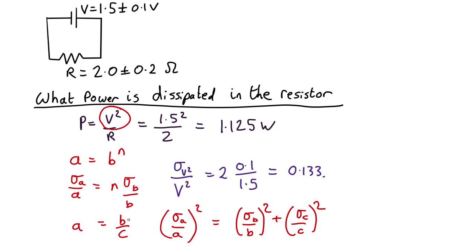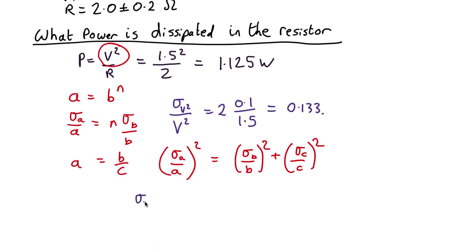So in this case b is v squared and c is r and a is the power. So it tells us that the uncertainty in the power divided by the power squared equals the uncertainty in v squared divided by v squared squared which is 0.133 squared plus the uncertainty in the resistance divided by the resistance squared. So that is 0.2 over 2 squared, all of which comes out as 0.0278.